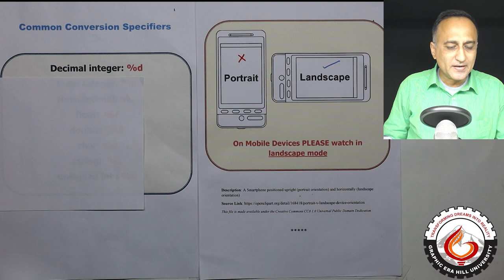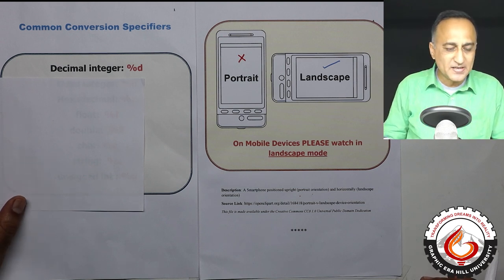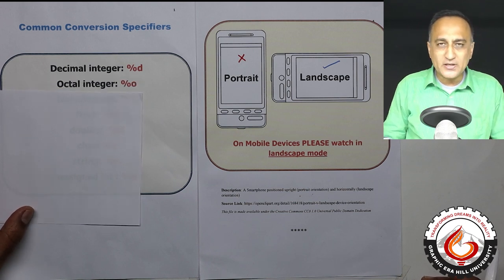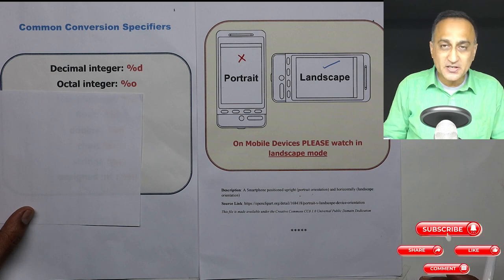If you want to treat a number as a whole number or an integer to the base 10, you will say %d. If you want to print an octal number, you will say %o, it is not zero, it is %o.